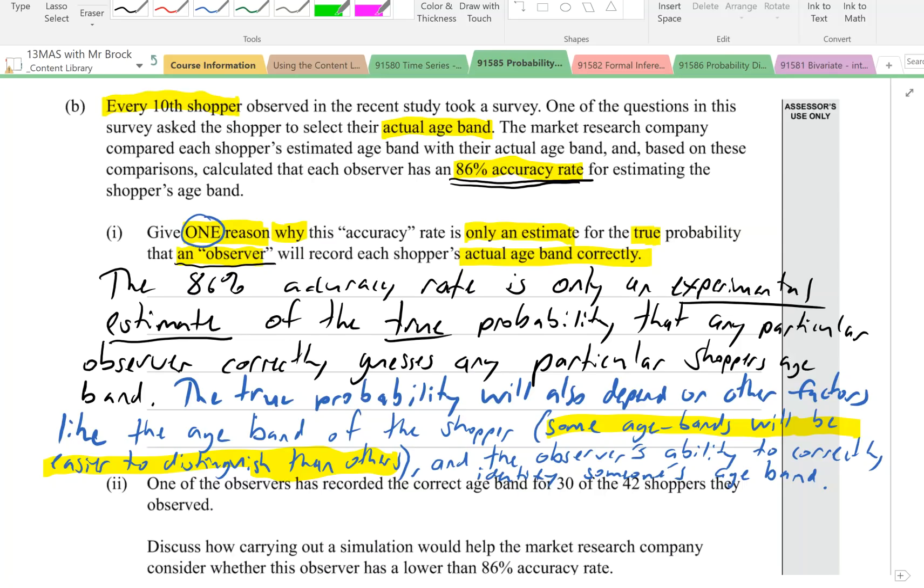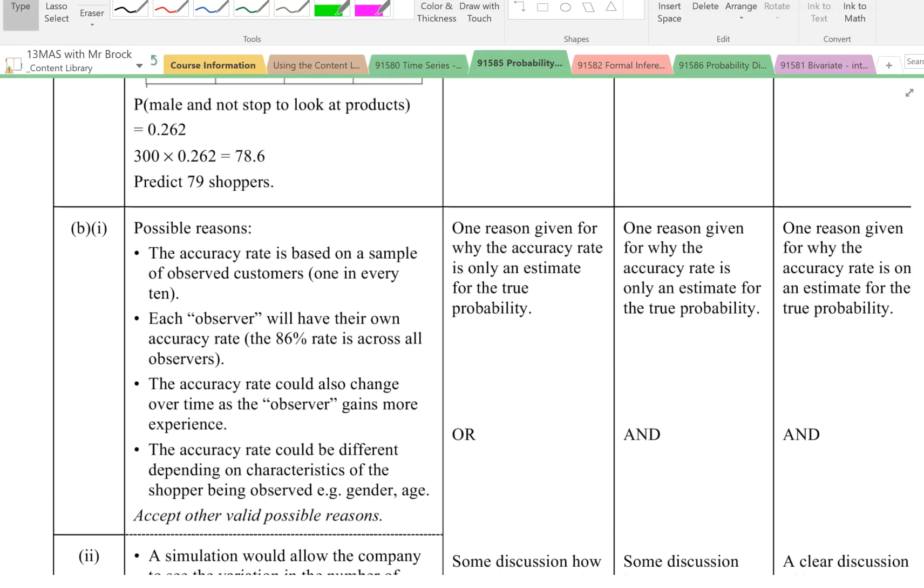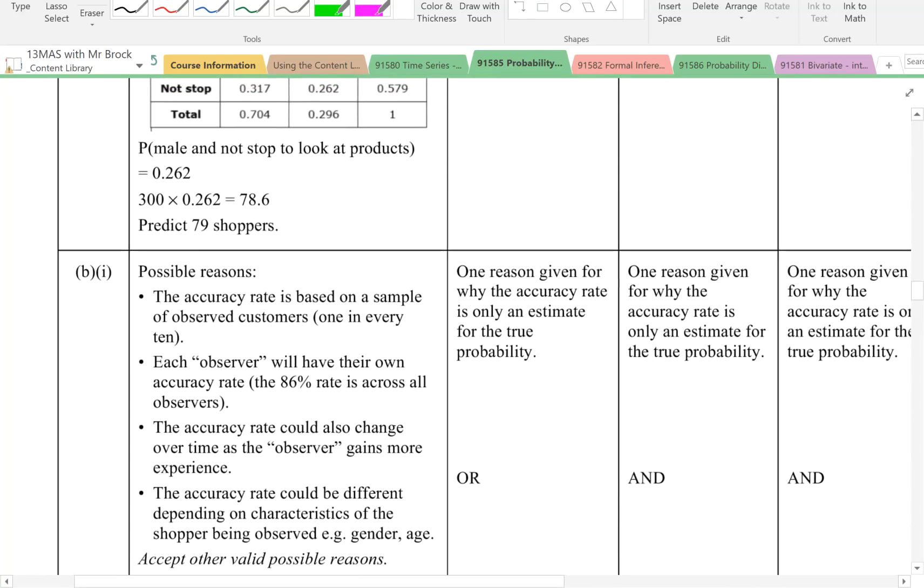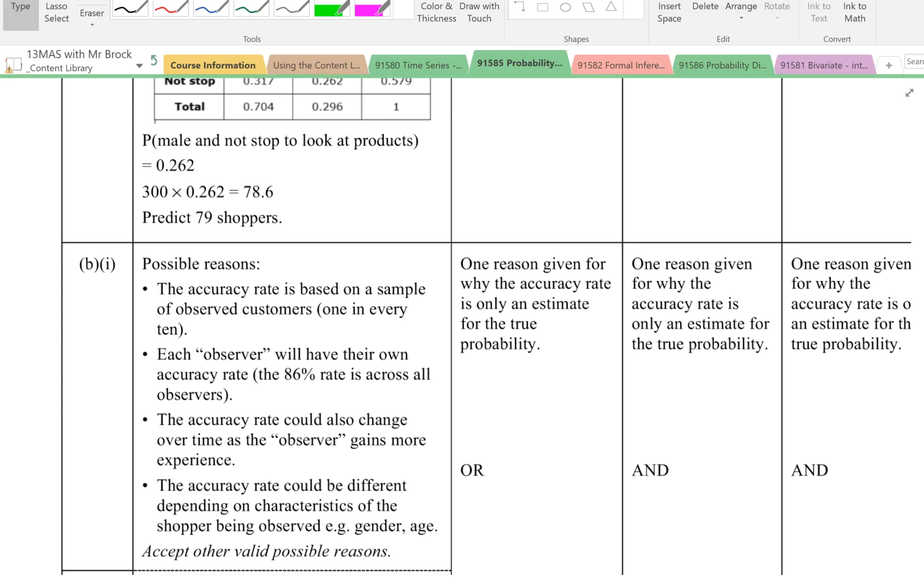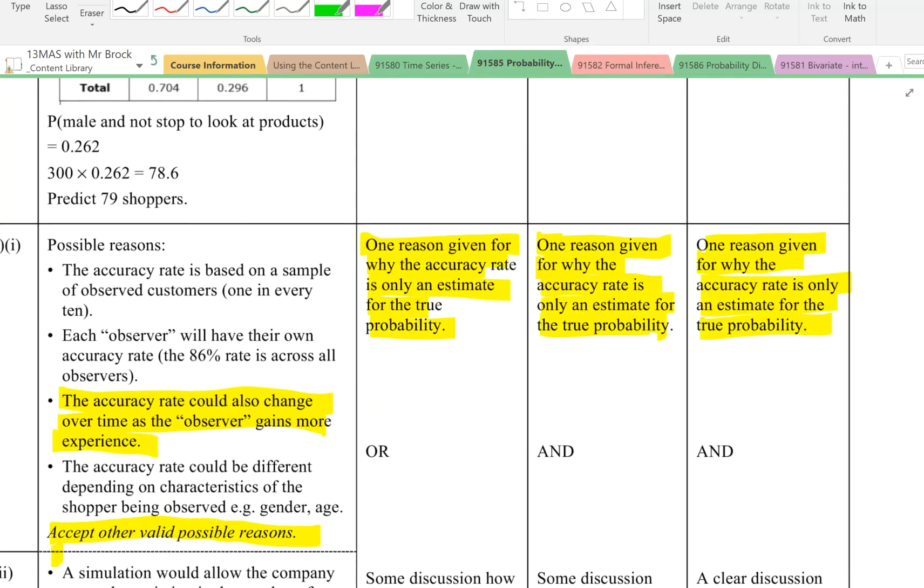If we look at the marking scheme, it says here possible reasons. The accuracy rate is based on a sample of observed customers, one in every 10. And no sample is ever going to be a perfect representation of the population. Each observer will have their own accuracy rate. 86% rate is across all observers. The accuracy rate could also change over time as the observer gains more experience. That's a good point I didn't think of. The accuracy rate could be different depending on the characteristics of the shopper. And it says, accept other valid possible reasons.